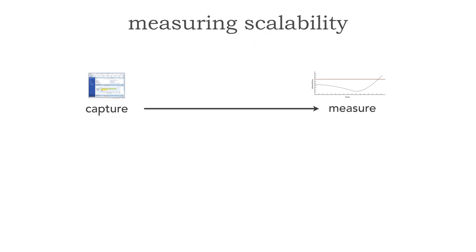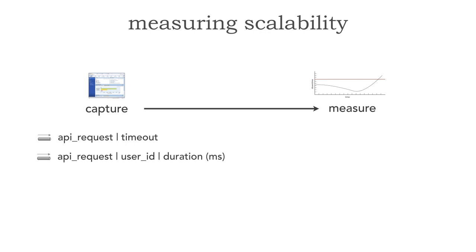Anytime we measure any sort of '-ility' in architecture, there are two steps: capture and then measure. There are three things we can capture, two in an automated fashion. We can capture timeouts based on any API request or function call — we know when a timeout occurs and can send that to a message queue. We can also send the duration along with the user ID, which gives us information about the number of users in the system. The API request, every time sent out with durations, also gives us a count of the number of requests — and that's how we track the increase in users and/or requests.